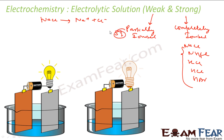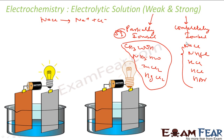Substances that ionize only to a certain extent — maybe 2%, 5%, or 10% — are called weak electrolytes. Examples include acetic acid, ammonia, ZnCl₂, and HgCl₂. Note that strong and weak are relative terms: NaCl is stronger than Cs₃COH, and KCl is stronger than SCl. Broadly, weak electrolytes are partially ionized and strong electrolytes are completely ionized.